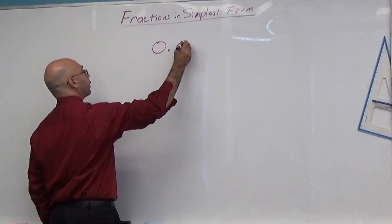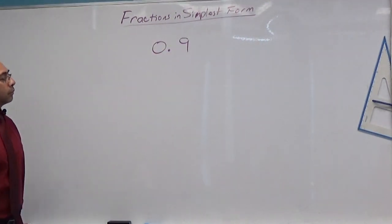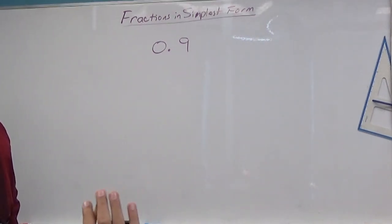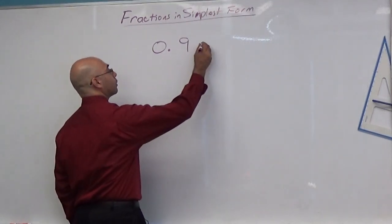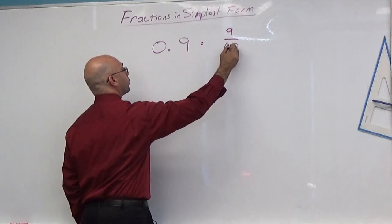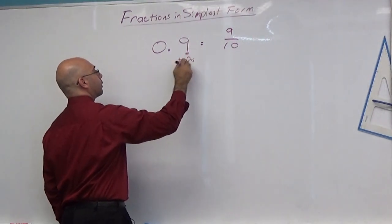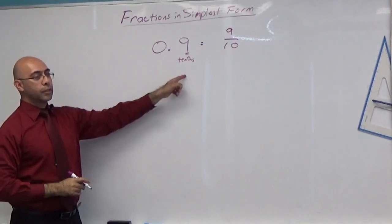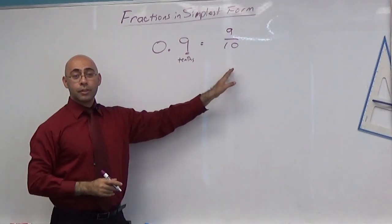Turn this 0.9 - remind me, how do I turn that into a fraction? Yes, this becomes 9 over 10 because we're in the tenths place, so it's just 9 over 10. Good. Now can I reduce this thing?